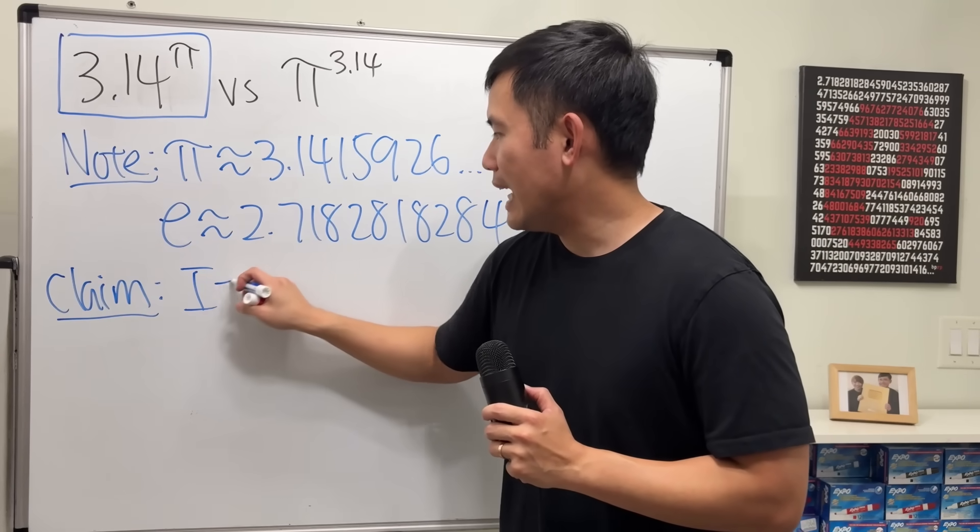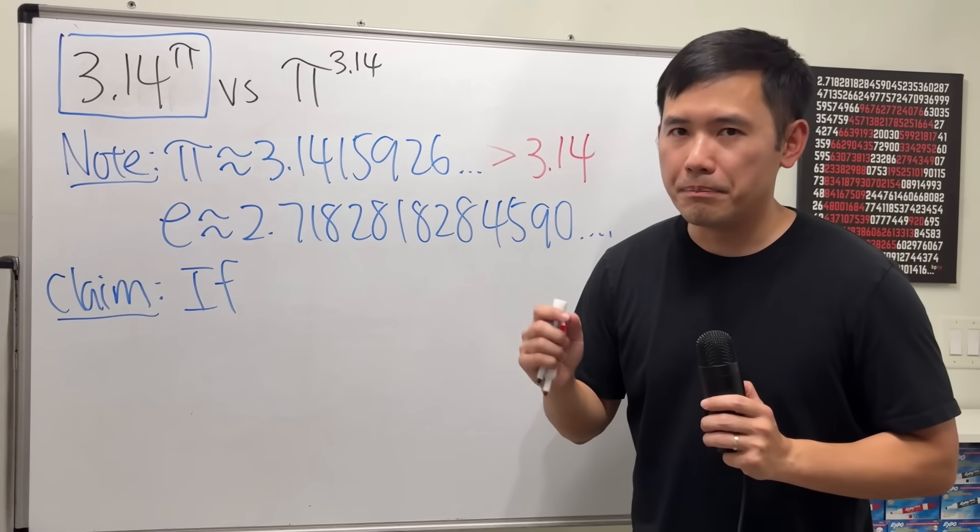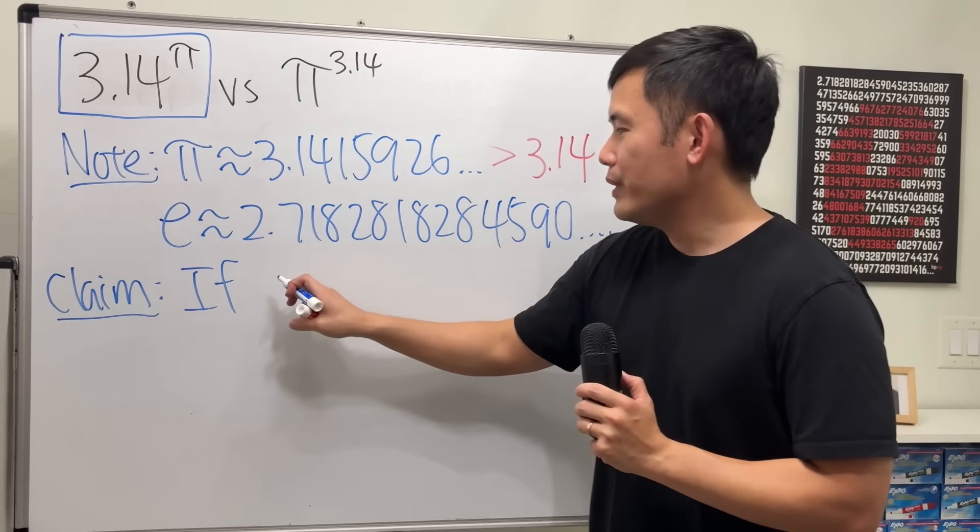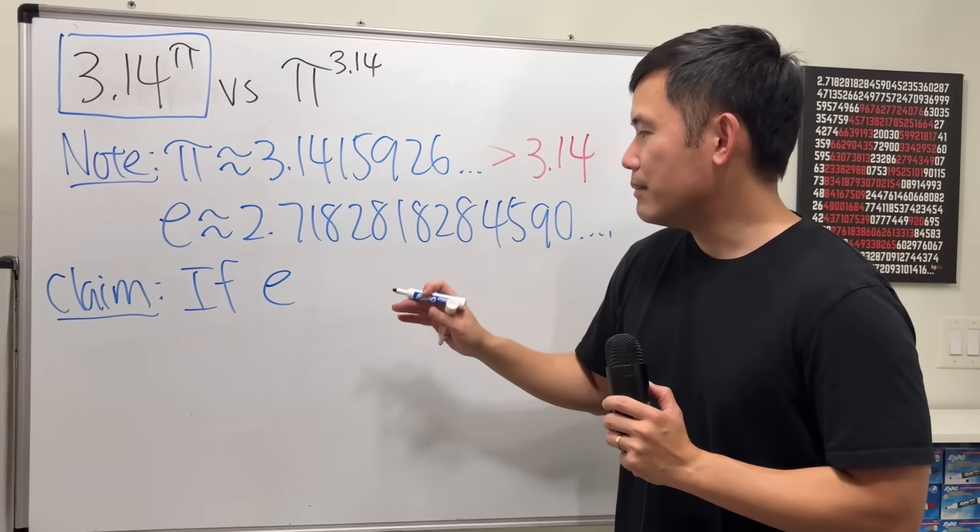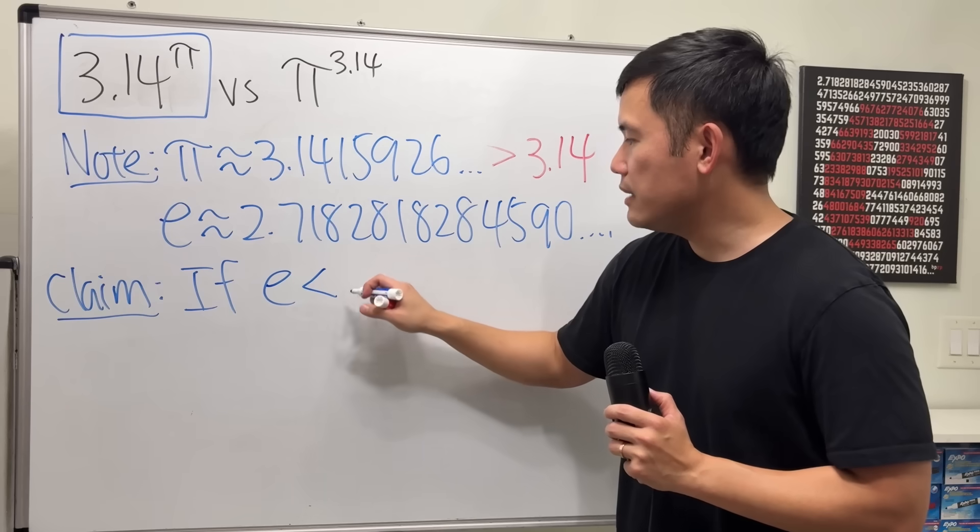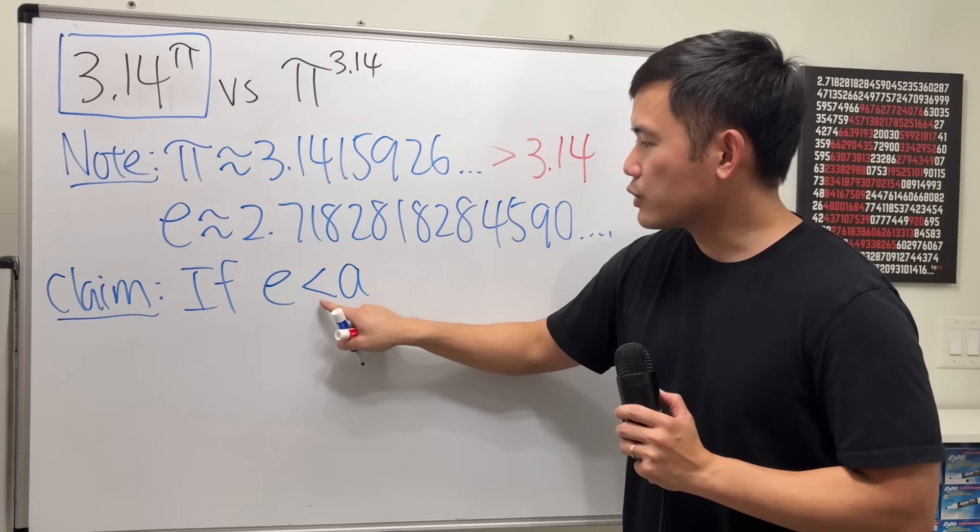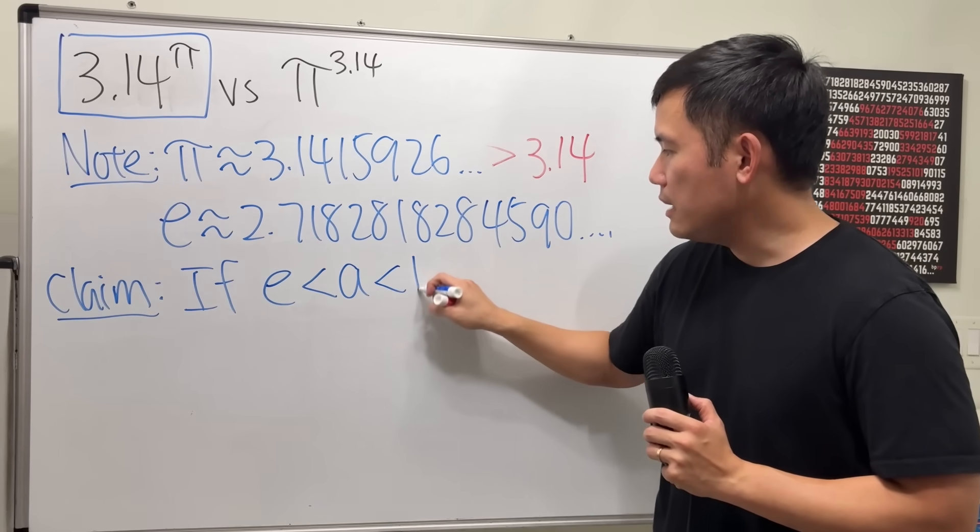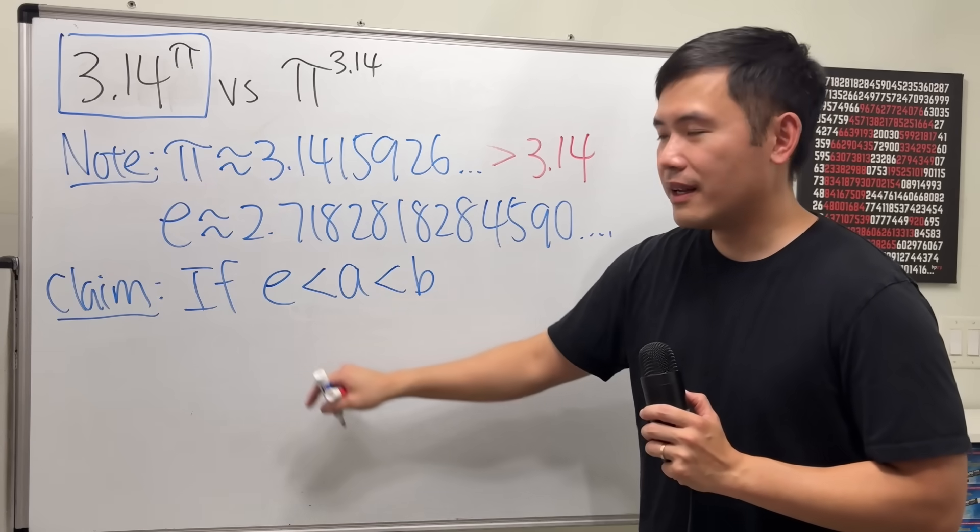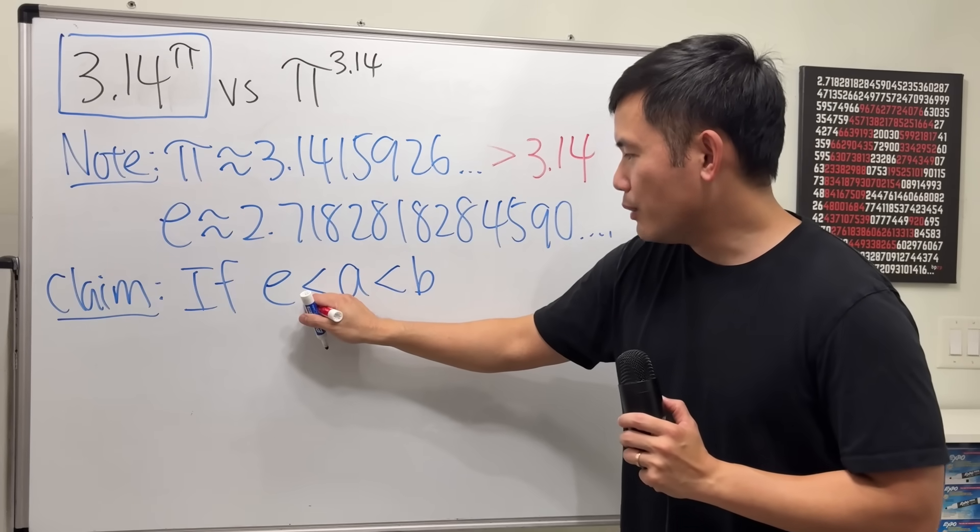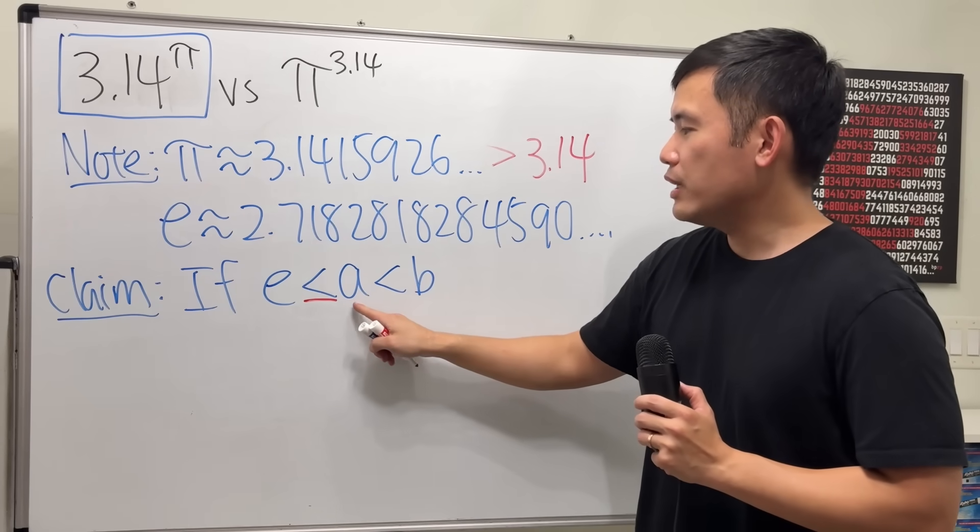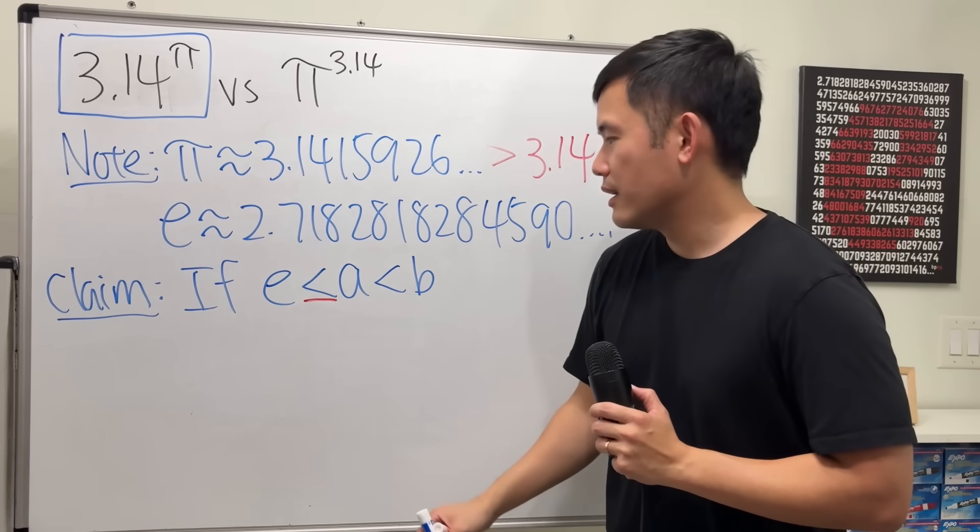Let's say we have two numbers. I will just call them a and b. If we have these numbers a and b both greater than e, and I will just say a is greater than e and b is greater than a. Right here, let me just put a small equal sign right here, because a could be the same as e. That's okay.